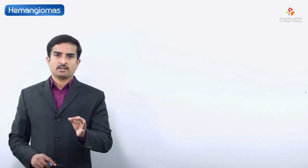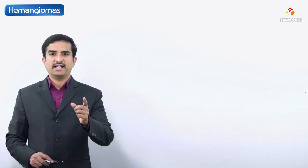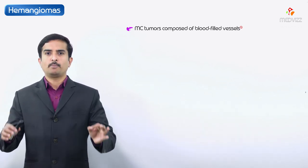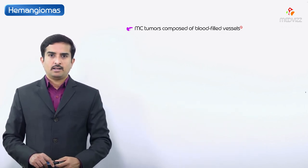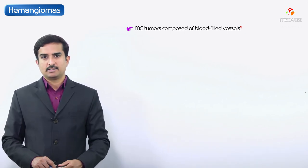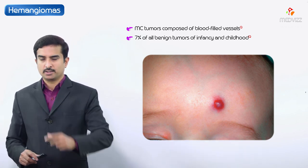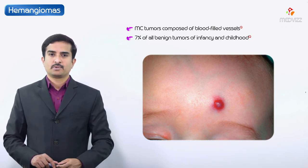In the discussion of vascular neoplasms, first we have to discuss about the benign neoplasms of the blood vessels. Hemangiomas are often described as blood-filled vessel tumors — the tumors which are composed of blood-filled vessels. Hemangiomas constitute 7% of all the benign tumors of infancy and childhood. This is an important MCQ point.